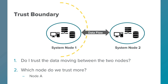We're going to look at a couple of examples to drive this idea of the trust boundary. Here, for example, we trust node 1 more so than node 2, and we effectively want to validate the data that's coming in from node 2 to node 1.